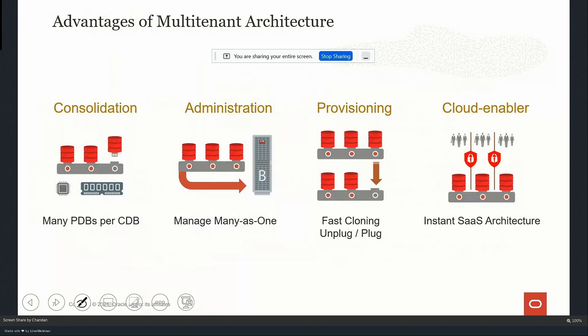The first advantage of multi-tenant architecture is consolidation. You can consolidate multiple environments into one. For example, if you have multiple VMs and physical servers with databases utilizing only 30%, 40%, or 50% of CPU power, you can consolidate those environments into one, assigning CPU and memory via the resource manager to each particular PDB. It's also much easier to handle one environment rather than multiple VMs, physical servers, and multiple database versions.